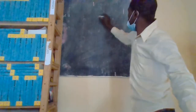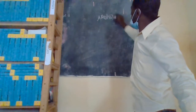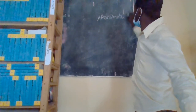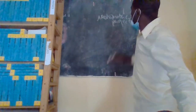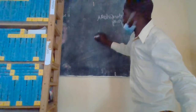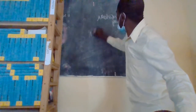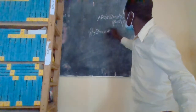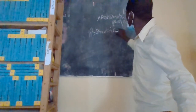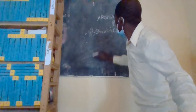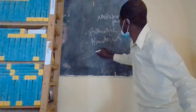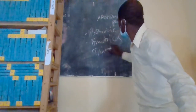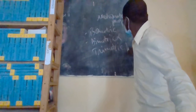Axonometric projection is further divided into: isometric, dimetric, and trimetric projection.